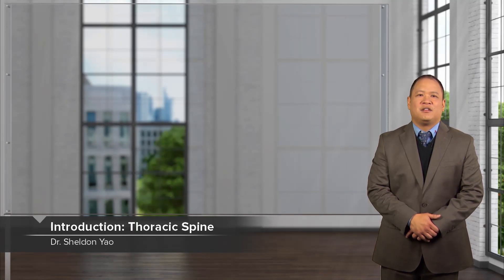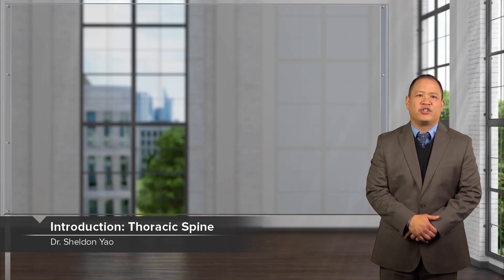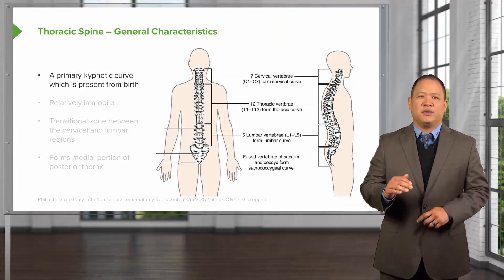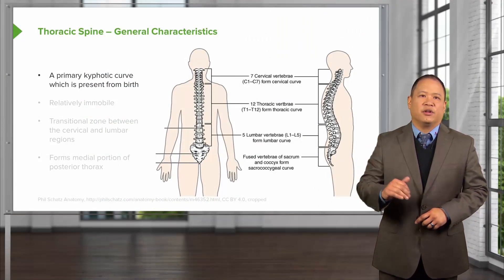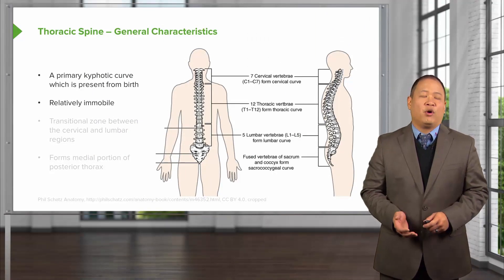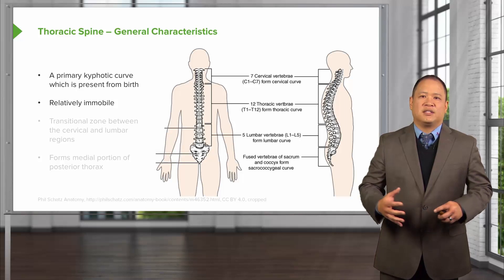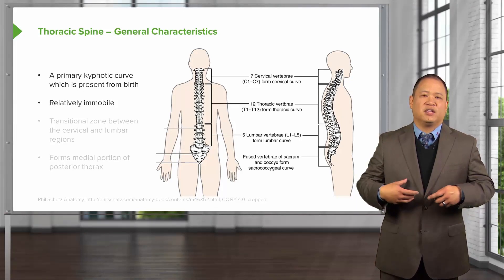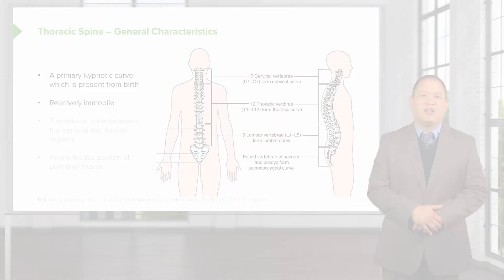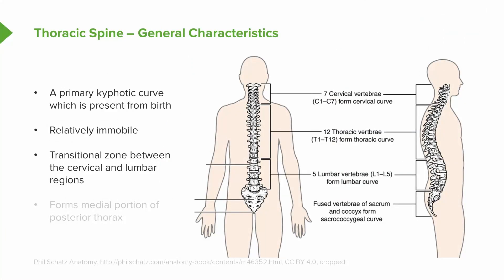We're going to talk about the thoracic spine. Here are some general characteristics you could appreciate. The thoracic spine is primarily a kyphotic curve, which means it is convex posteriorly. This convexity is present from birth. It's relatively immobile because it's connected to our ribcage, and the ribcage limits motion in the region. It is a transition zone between the cervical and thoracic regions, and it helps to form the posterior portion of the thorax.